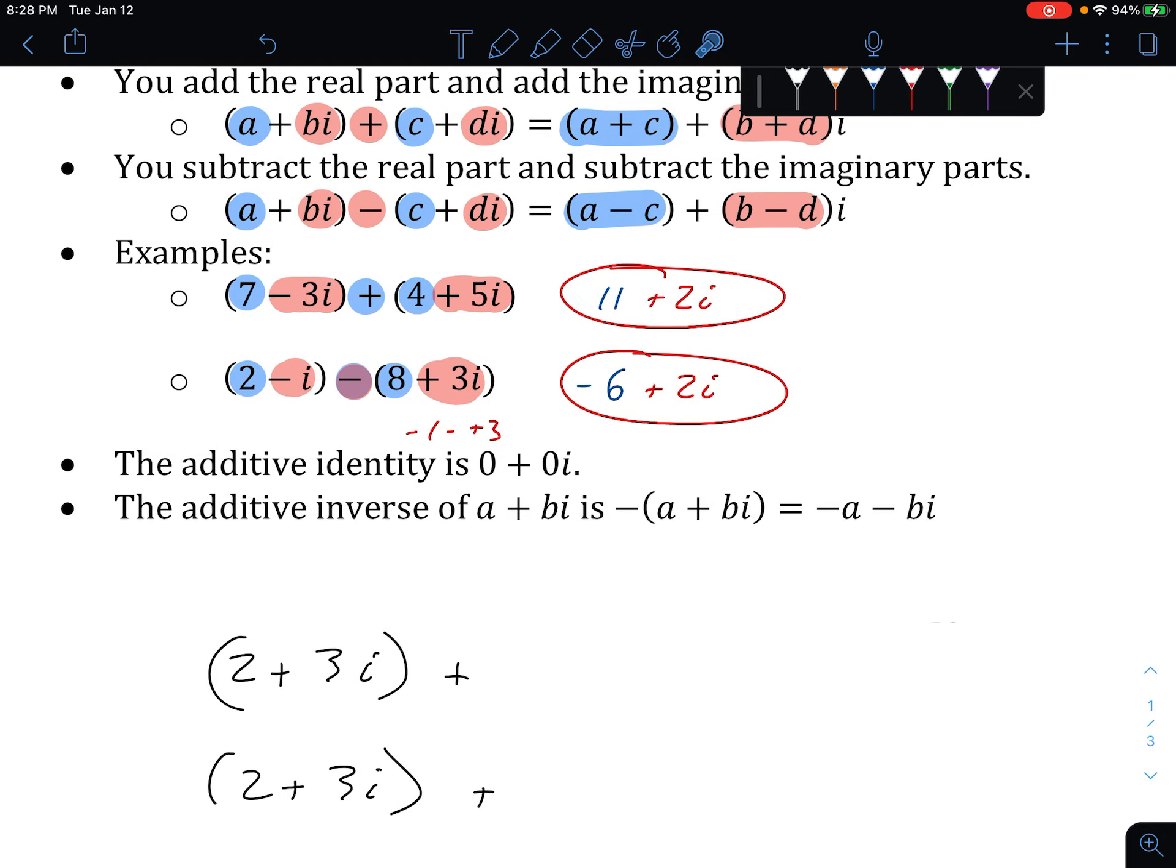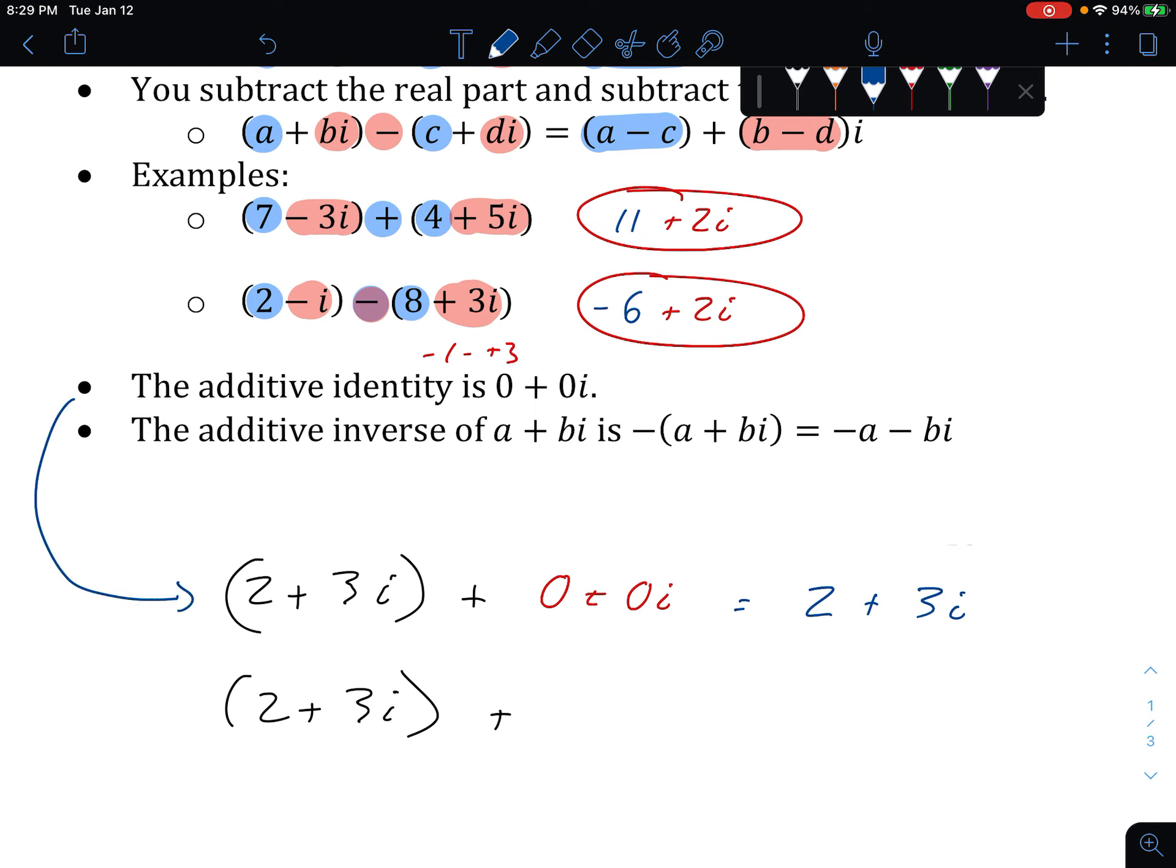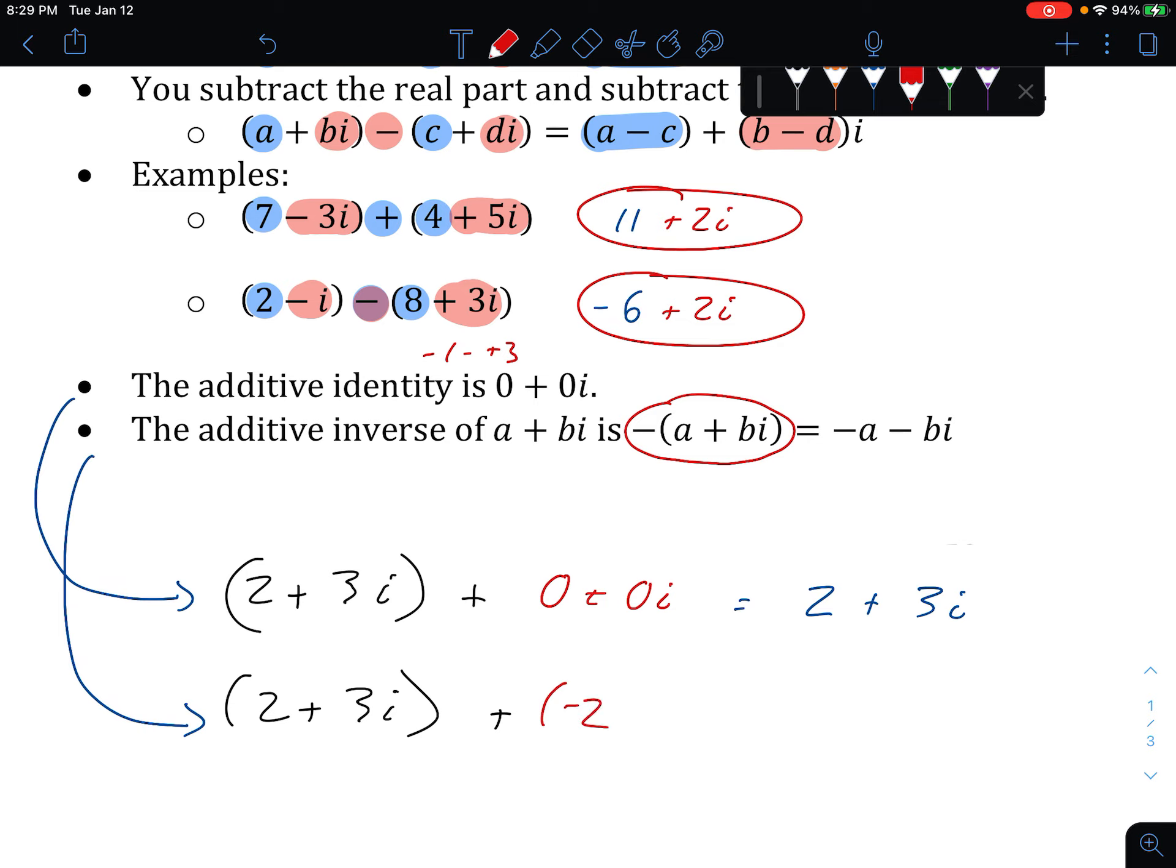Last two basic facts. Kind of our overarching facts of addition and subtraction. The additive identity is 0 plus 0i. So if I were to add to 2 plus 3i, 0 plus 0i, that very clearly would be 2 plus 0 plus 3 plus 0. You get the same thing. The additive identity gets you itself back.